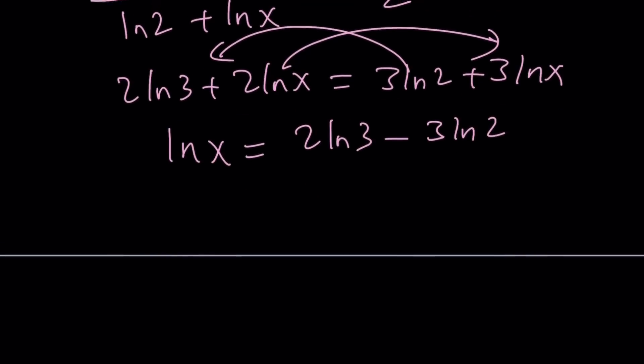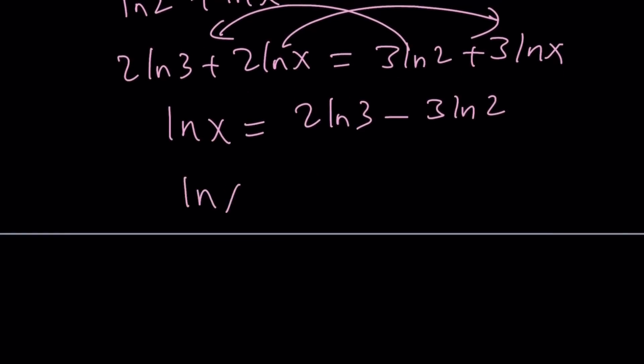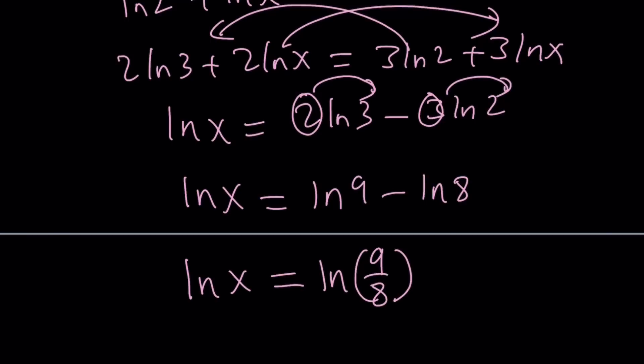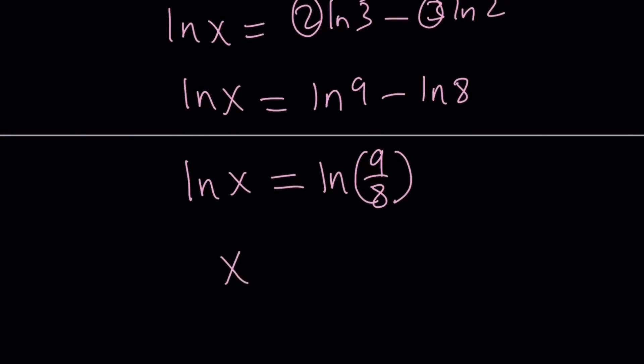And then bring the 2ln(x) here. Subtract ln(x) and bring the other guy here. 2ln(3) minus 3ln(2). Uh-oh, this doesn't look good. Don't worry about it. It's going to look good. Now, we can write it as, again, put it up. ln(9) minus ln(8) if you put it up. And then, the difference of ln's can be turned into the ln of a quotient. And boom, we got the answer. x equals 9 eighths as before.